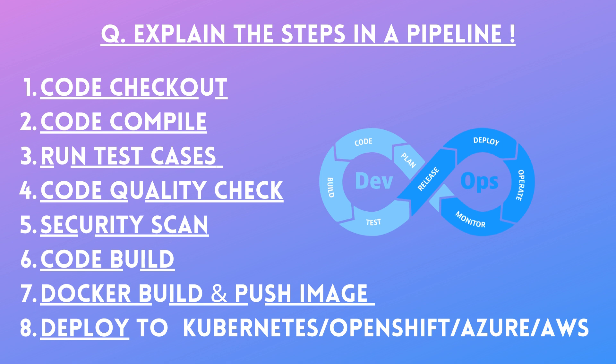Then we have code quality check, which is usually done with a tool called SonarQube. It helps you identify vulnerabilities, code smells, bugs, or any other issues in your source code. After that we have security scan, where you can use tools like OWASP Dependency-Check or Trivy. Trivy is used to scan Docker images for known vulnerabilities, and OWASP Dependency-Check can scan your repository folder for known vulnerabilities.